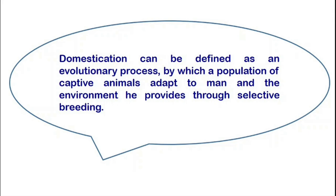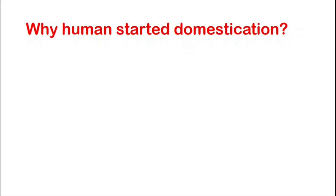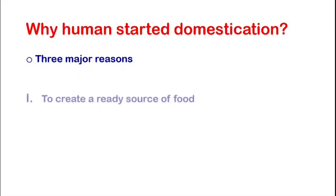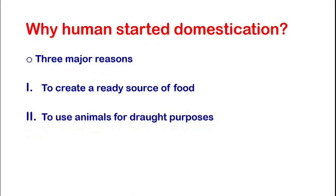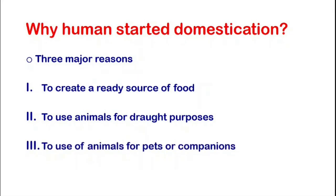When we look at human history, we can find three major reasons for why humans started domestication. The first is to create a ready source of food. The second is the use of animals for draft purposes, either to pull carts or to plow lands. And the third is the use of animals for pets or companions.